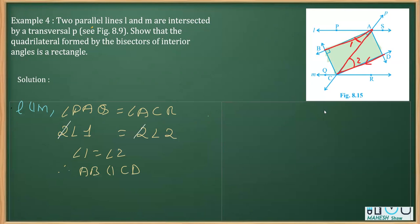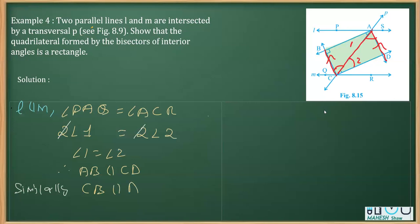Once we have proved these two lines as parallel, we simply need to state — without re-proving — that similarly, BC is parallel to AD. Using the same method, we can prove those two angles equal and therefore those two lines parallel. When both pairs of opposite sides are parallel, the figure is a parallelogram, so ABCD is a parallelogram. In the first part we have proved this figure is a parallelogram.